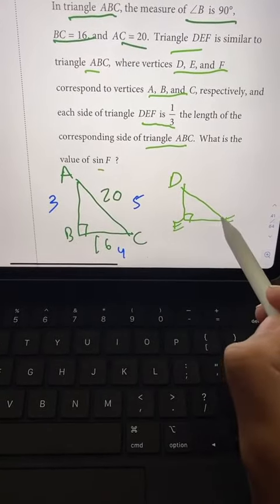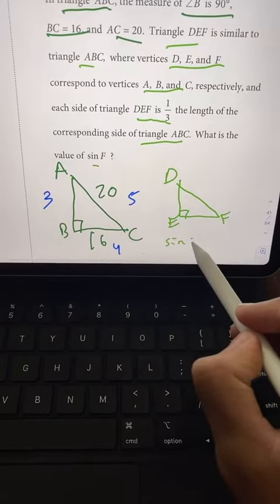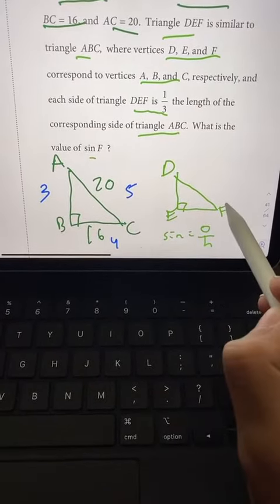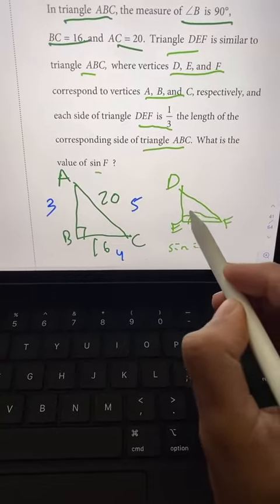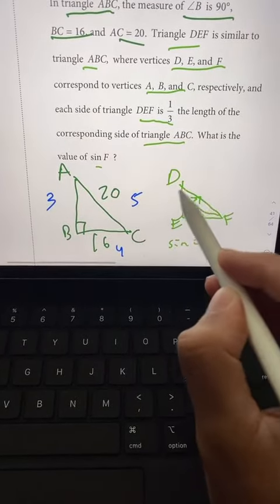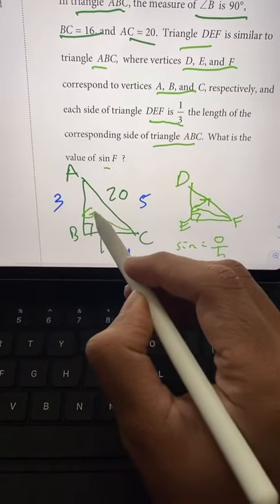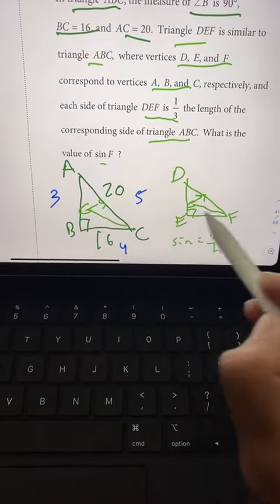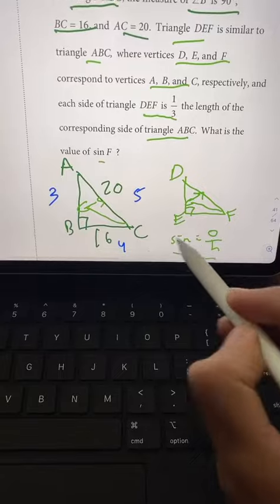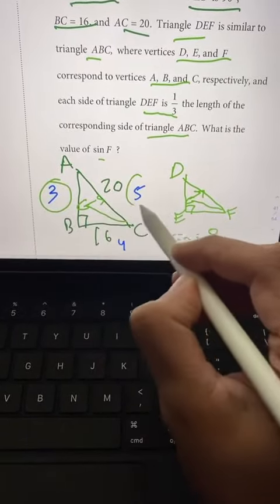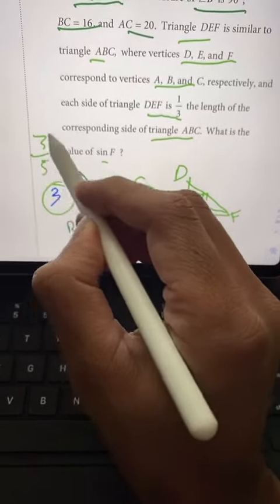Now sine F is what we're looking for. Remember that sine is opposite over hypotenuse. The beauty of this is that the opposite over hypotenuse here is going to be exactly the same as the opposite over hypotenuse here, because they're similar triangles and sines are ratios. So the sine of C is the same as sine of F, which is 3 over 5. That is our answer.